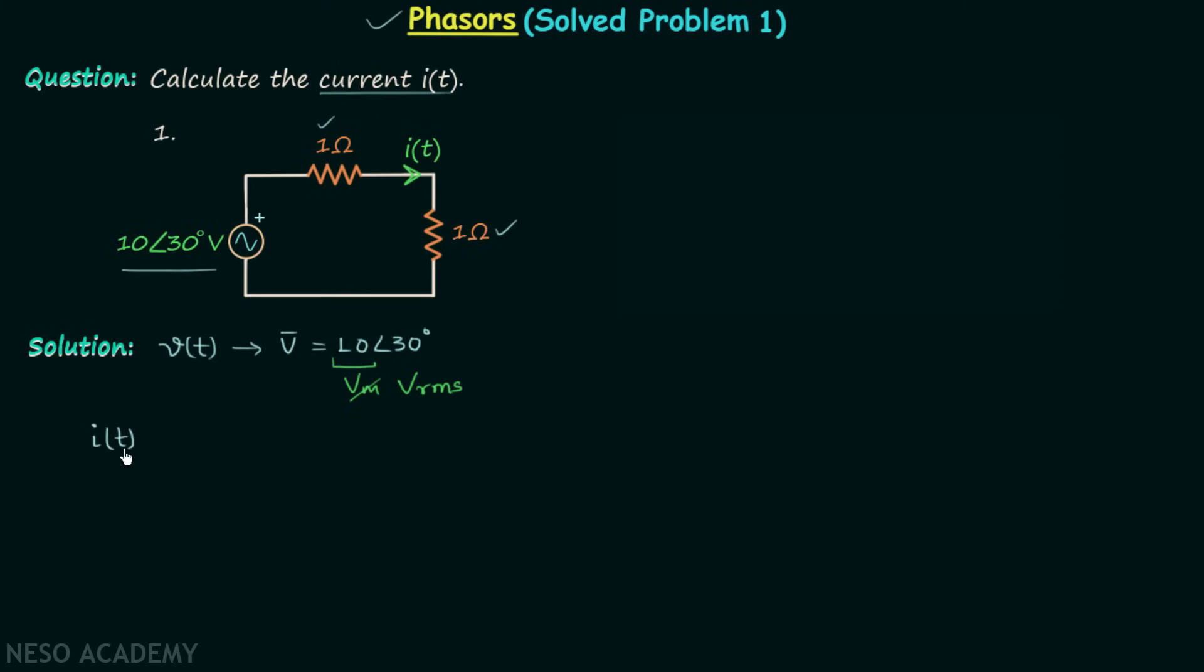We know current IT will be equal to voltage Vt divided by 1 ohm plus 1 ohm. From here we can say that current IT is equal to Vt over 2 amperes. But in question, Vt is not given directly - the corresponding phasor of Vt is given. Therefore in place of Vt over 2, we will have V phasor over 2. This will give us I phasor, not IT, and this I phasor will be corresponding to the RMS value of current IT. So we will have I phasor equal to 10 angle 30 degrees divided by 2 amperes, which is equal to 5 angle 30 degrees.